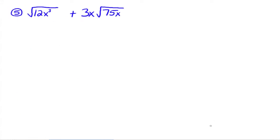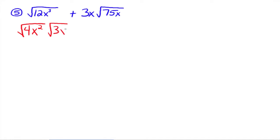Let's do one more: square root of 12x cubed plus 3x times the square root of 75x. This time we're bringing in variables, but all the logic for combining like terms still applies. They're not like radicals to begin with, but both can be simplified. The square root of 12x cubed: the largest perfect square dividing into 12 is 4, and for x cubed we need the largest exponent less than 3 divisible by the index 2, which is x squared, leaving 3x. So we get the square root of 4x squared times the square root of 3x.